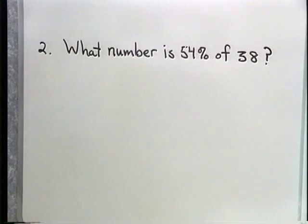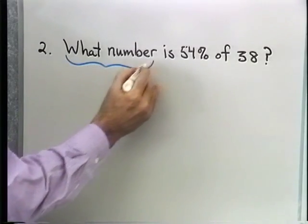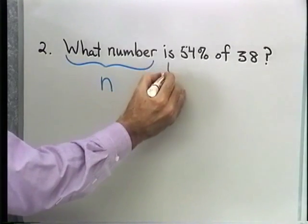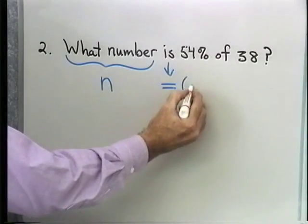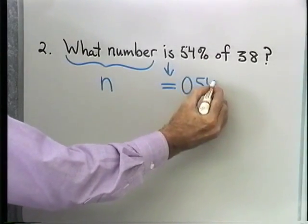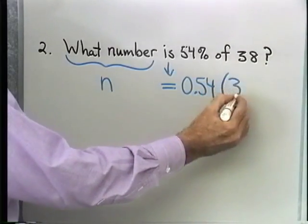Let's look at our next problem. What number is 54% of 38? Again, I just do my translation. What number, that will be n, is translates as equal, 54%, 0.54, and then of translates to multiply, I'll use parentheses this time, 38.